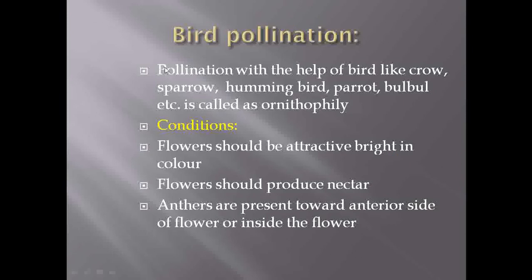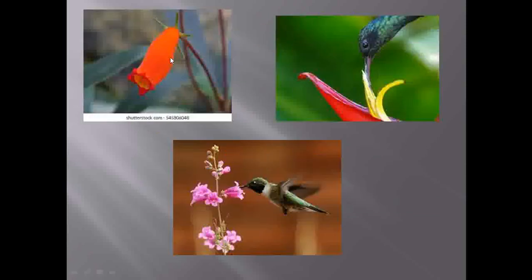Moving towards the next type: bird pollination. Pollination which takes place with the help of birds like crow, sparrow, hummingbird, parrot, or bulbul is called ornithophily. For bird pollination, the shape of the flower should be tubular so that the beak of the bird can easily be inserted into the flower, and the anthers stick to the beak. When the birds fly elsewhere, they drop pollen grains onto another flower, completing pollination.